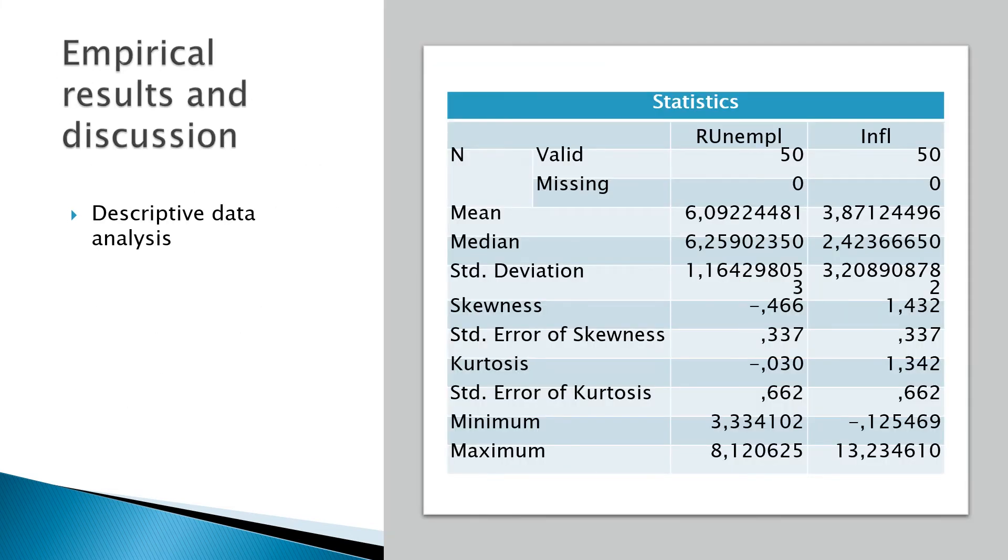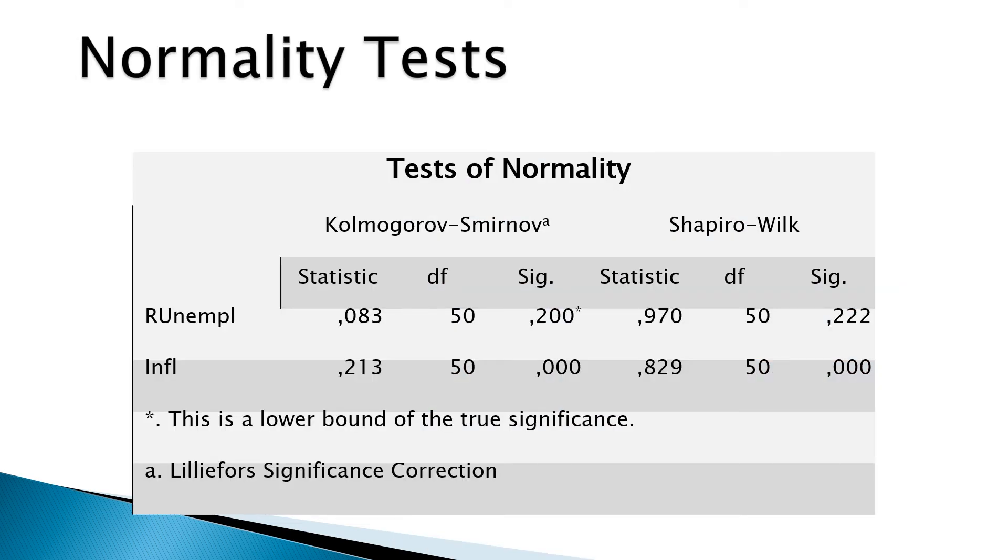Empirical results. The variables taken into account are unemployment rate, calculated as the number of unemployed persons relative to the civilian active population, and the inflation indicator expressed with the help of consumer price indexes as a percentage change over the same period of the previous year. The normality test shows that the distribution is not normal in the case of the unemployment rate, the value of significance being higher than 0.05 in both tests. For the inflation variable, the distribution is normal.